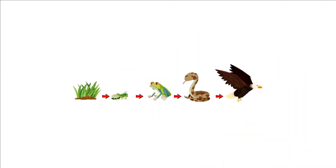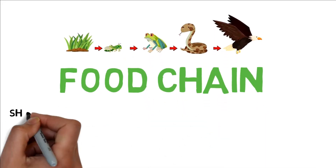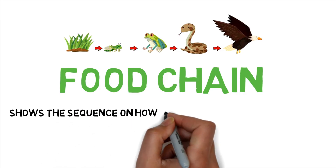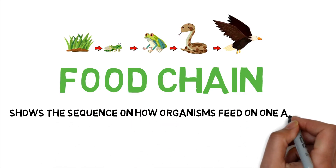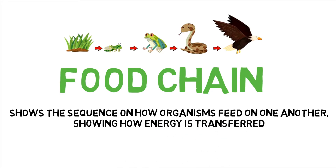When you were in the lower grades, you studied the food chain. A food chain shows the sequence on how organisms feed on one another, showing how energy is transferred. In the example given on the screen, we can see the grass eaten by the grasshopper, the grasshopper eaten by the frog, the frog eaten by the snake, and the snake eaten by the hawk. There is a sequence.